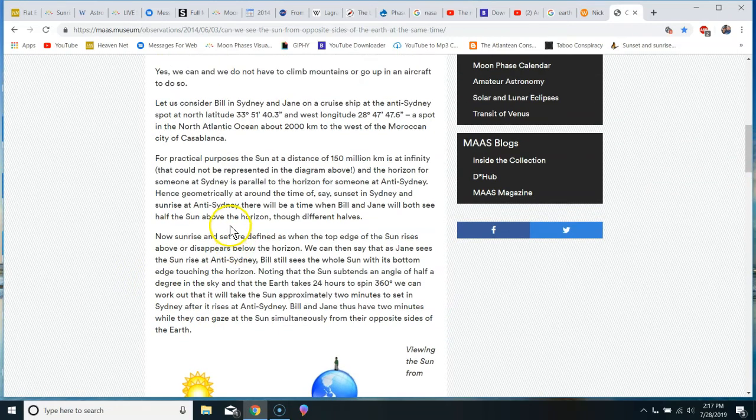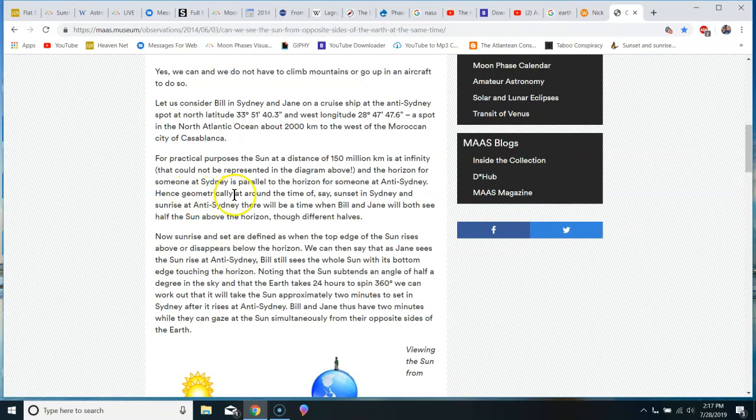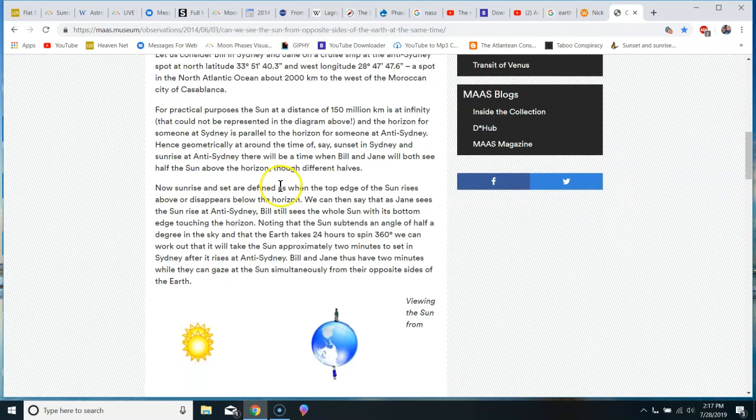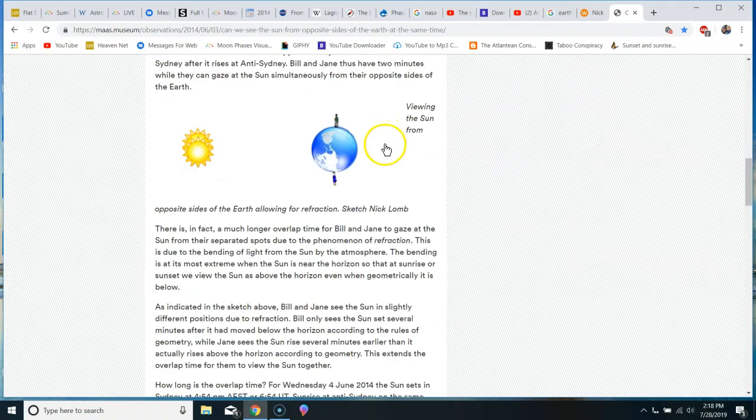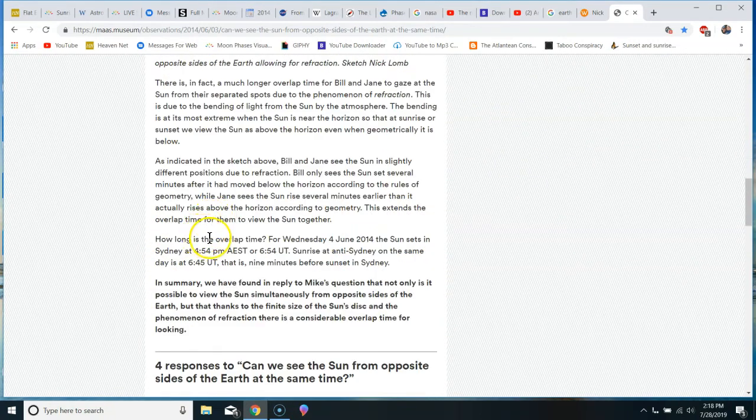So, he basically works out, we can work it out that it will take the sun approximately two minutes to set in Sydney after it rises in Anti-Sydney. Bill and Jane thus have two minutes while they can gaze at the sun simultaneously from their opposite sides of the Earth. Now, remember, this is geometrically that two people on opposite sides of the Earth can both see the sun, the same sun, simultaneously for two minutes. He then goes on to talk about refraction. He adds refraction to the equation and comes up with adding refraction. They can see the sun simultaneously for nine minutes.